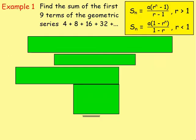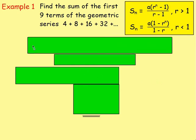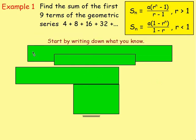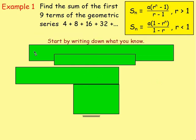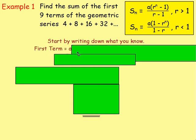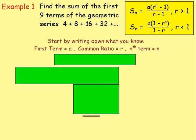Let's look at some examples using these. Example 1: find the sum of the first 9 terms of a geometric series: 4 plus 8 plus 16 plus 32 and so on. What would you do first for any of these? Just start off writing down what you know — it makes it slightly easier. Write down the first term, the common ratio, and how many terms you have.